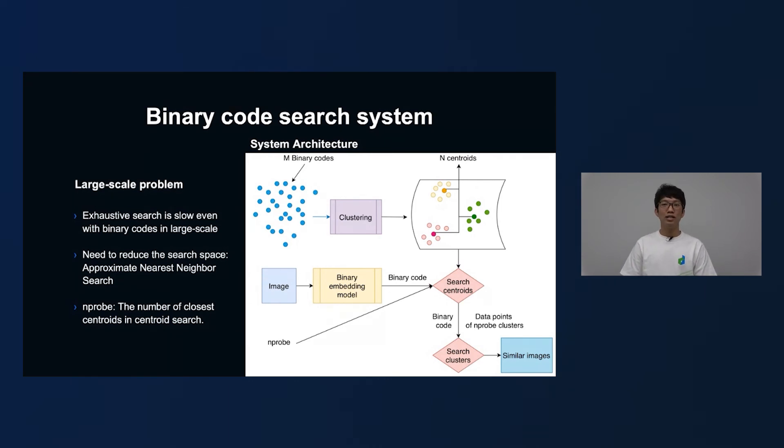We call this search centroid search. One important parameter is nProb, which is the number of closest centroids you want to retrieve. And you can simply understand this parameter just like the k parameter in the k-nearest neighbors. After the search centroid step, the next step is easy. We just simply perform an exhaustive search in all of the closest clusters obtained from the previous step, and return the list of similar images. That's how binary code search system works.